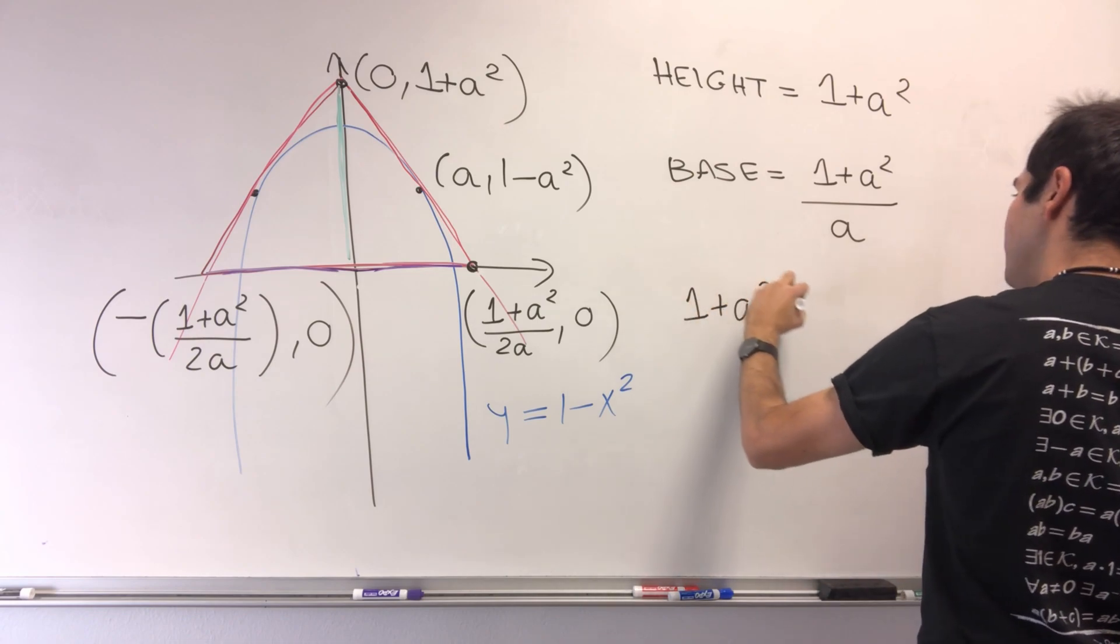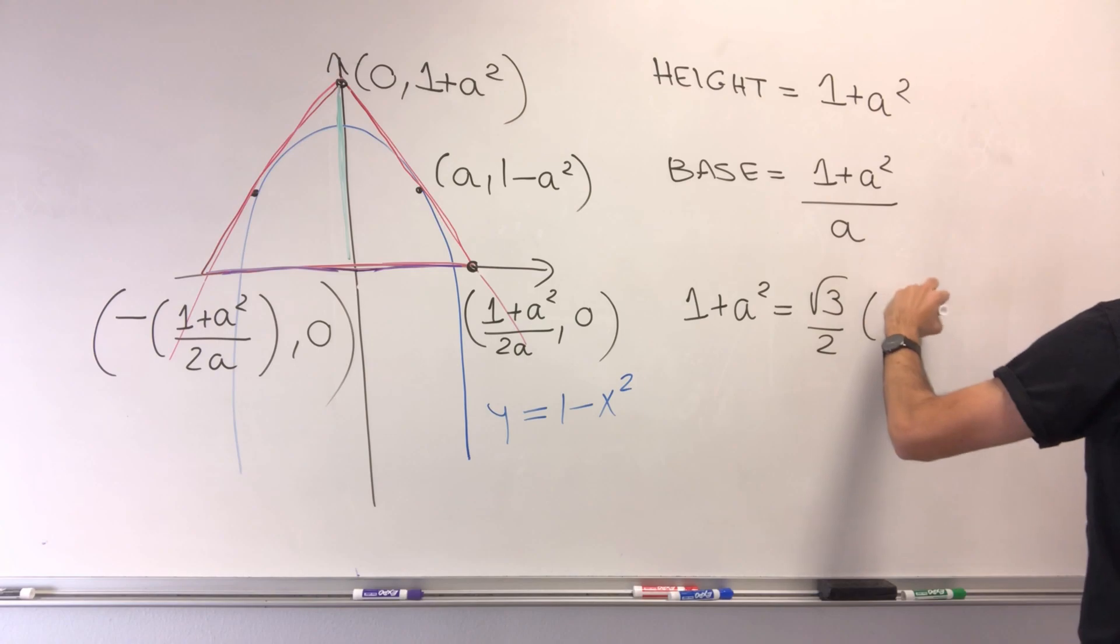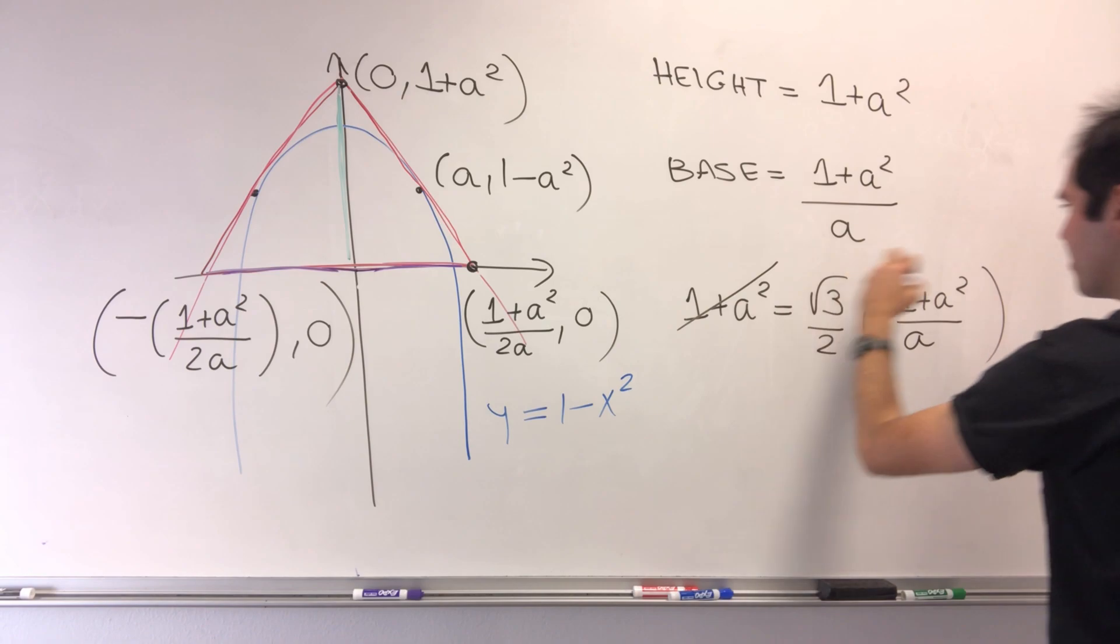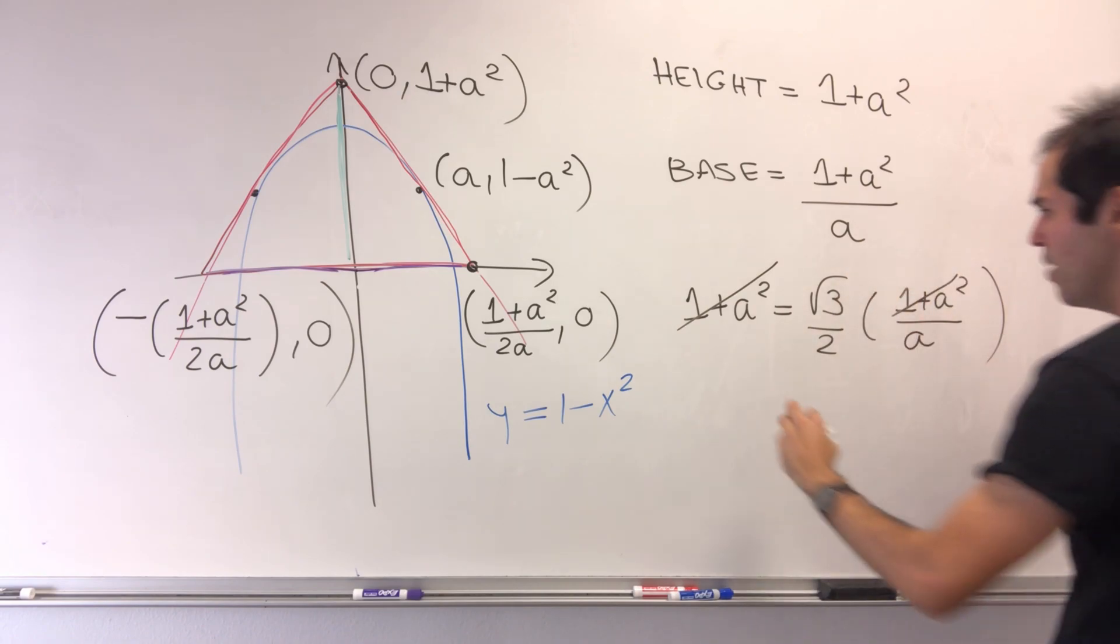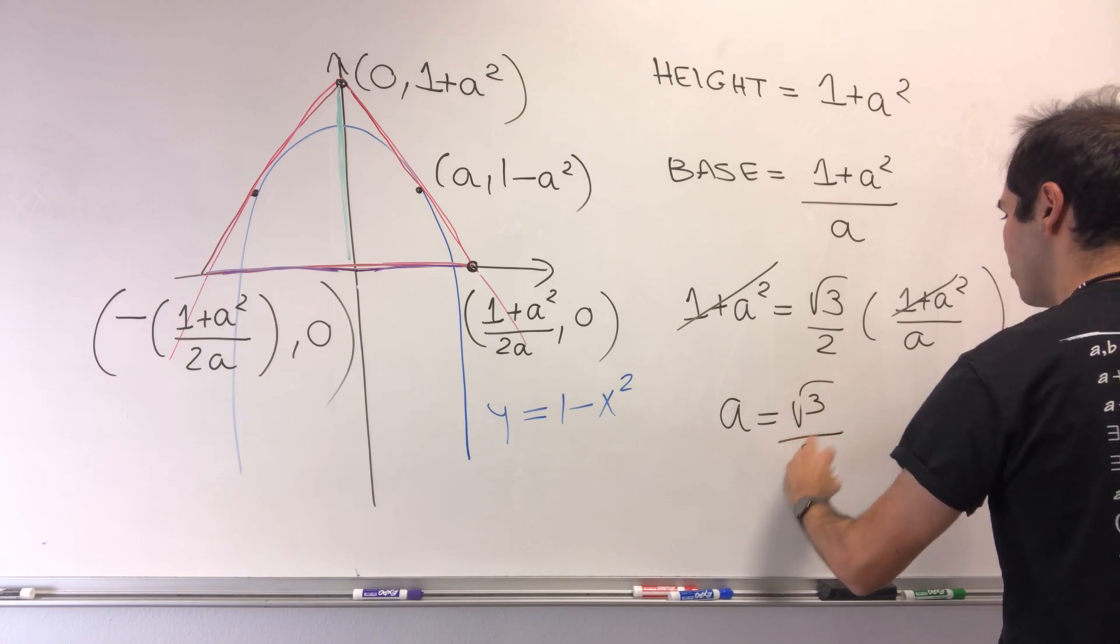So 1 plus a squared is square root of 3 over 2 times 1 plus a squared over a. But the cool thing is there is this common factor. And then multiplying stuff out, we get a is square root of 3 over 2.